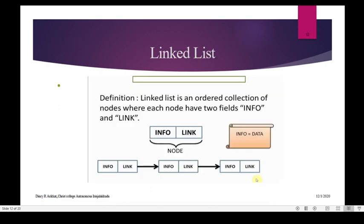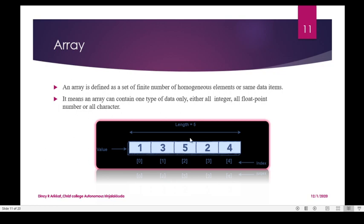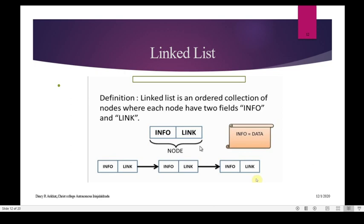Next is linked list. Linked list is an ordered collection of nodes. A node is a part of the list — info means data and link means pointer. If we have an array, elements are 3, 5, 2, 4. With a linked list, if we have a link or pointer, it points to the first node. From the first node we go to the second node, and from there to the third node.